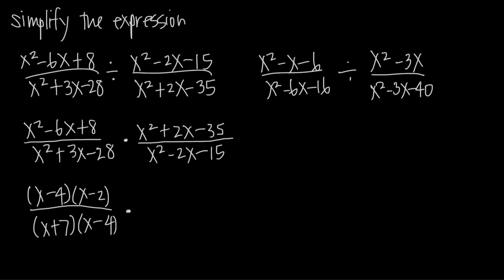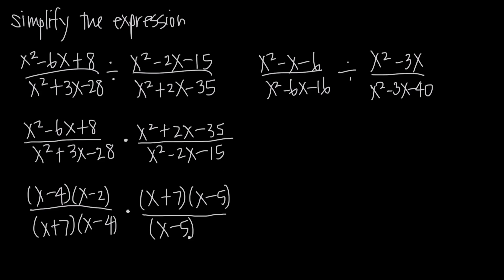Looking at the second fraction, we want to factor x squared plus 2x minus 35, which factors into (x plus 7)(x minus 5), since positive 7 times negative 5 is negative 35, and positive 7 plus negative 5 is positive 2. Then x squared minus 2x minus 15 factors as (x minus 5)(x plus 3), since negative 5 times positive 3 is negative 15, and negative 5 plus positive 3 is negative 2.